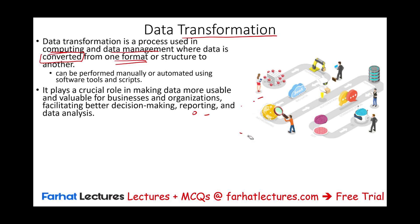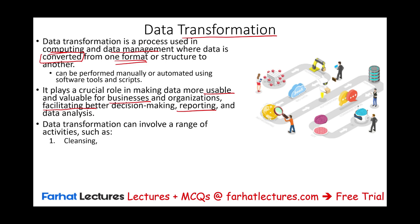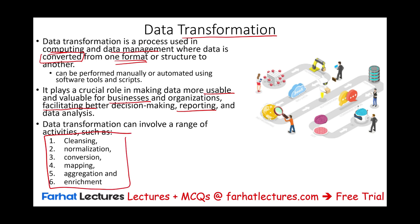We're going to look at several other examples. Why is this necessary? It's crucial in making data more usable and valuable for businesses. The data has to be standard throughout the database in order to facilitate better decision making, reporting, and data analysis. Data transformation can involve several steps: cleansing the data, normalizing the data, converting the data, mapping the data, aggregating the data, and sometimes enriching the data. In this session we would look at all these steps. There could be other steps, but those are usually the main ones.